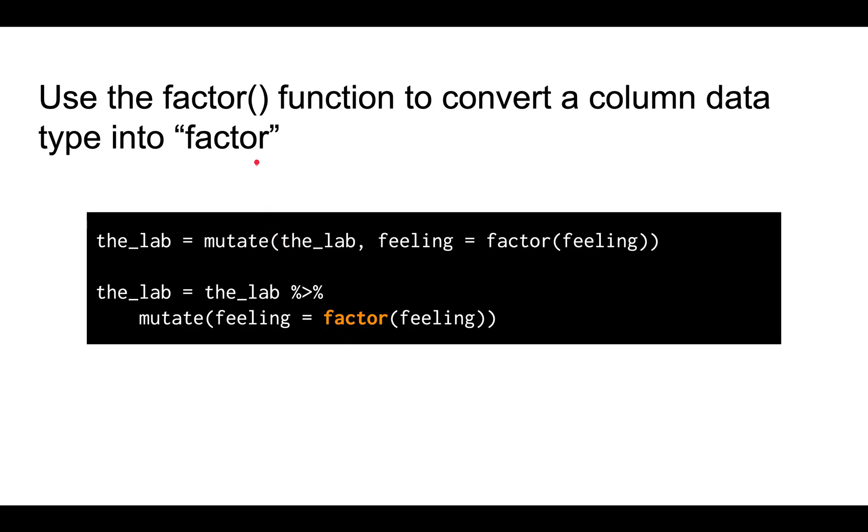In R, you use the factor function to convert a column's data type into factor. This is an example of how you might use the factor function together with the mutate function to convert the feeling column into a factor.